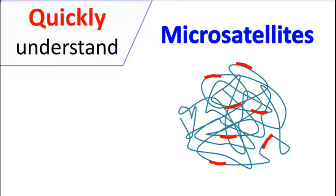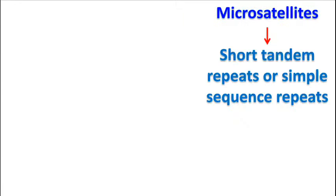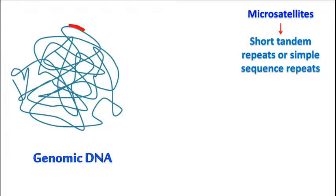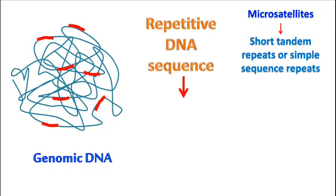Hey guys, bookmark chemistry basics here. Let's talk about microsatellites. Microsatellites are often termed as short tandem repeats or simple sequence repeats. Microsatellites are short repetitive DNA which are about 6 to 10 base pairs in length.